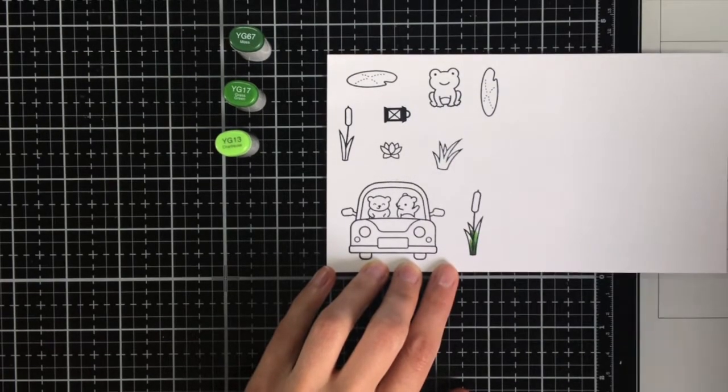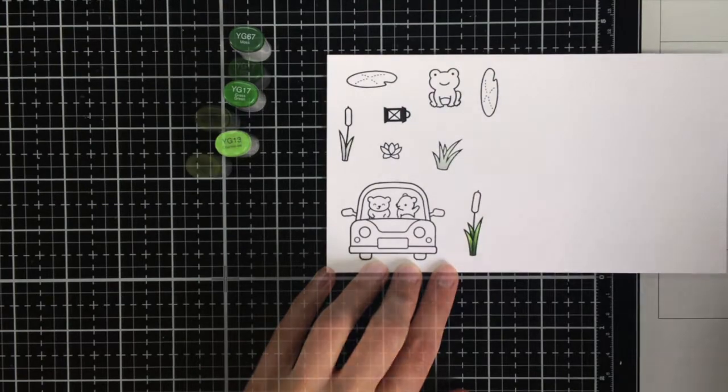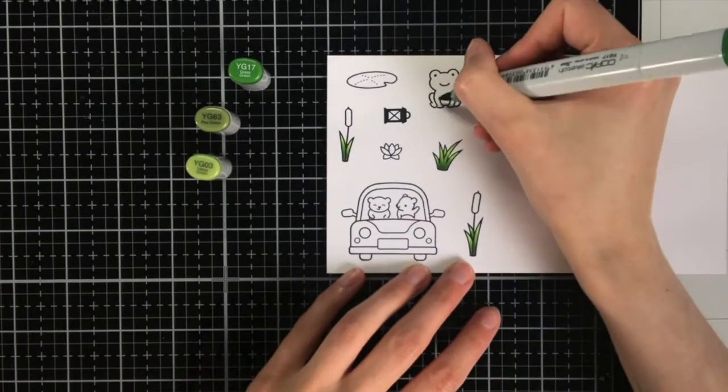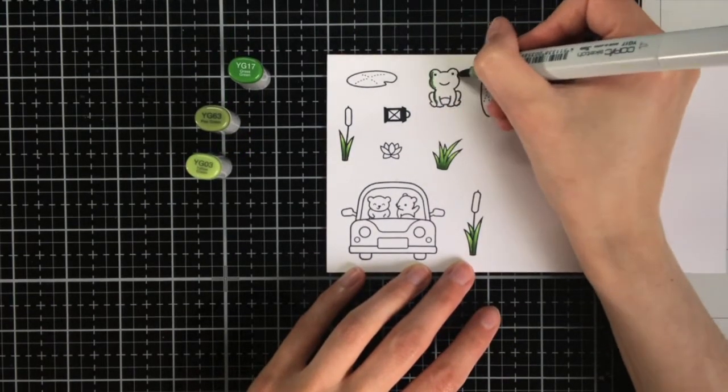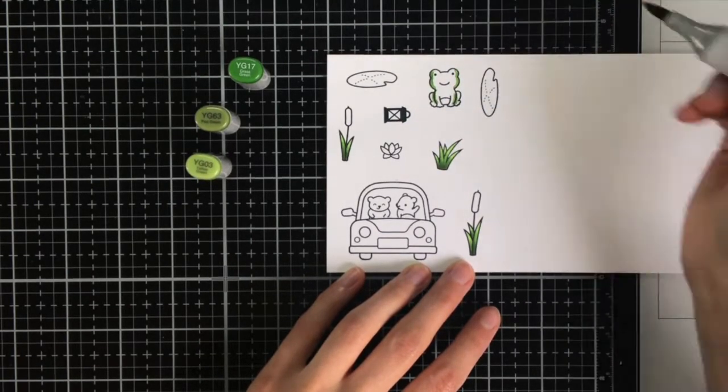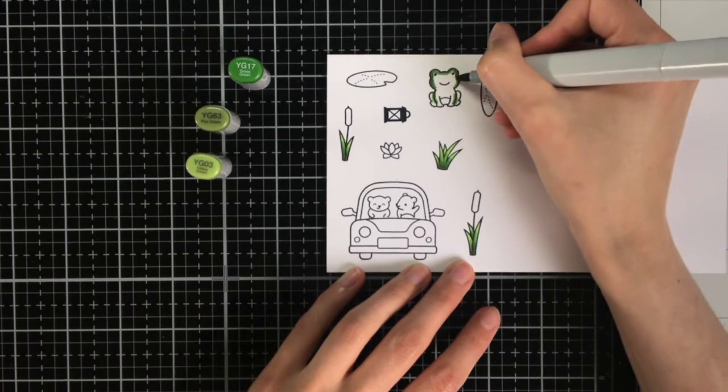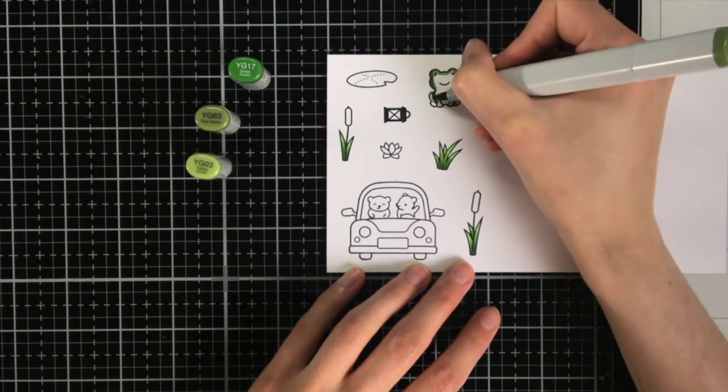As I'm going to use my Copic markers, I stamped all the images with Memento Tuxedo Black ink, which is a Copic friendly ink. As there are a number of different green elements in this card, I did not want to use the exact same green color because then I thought it would look maybe a bit flat.